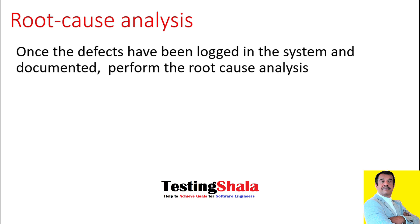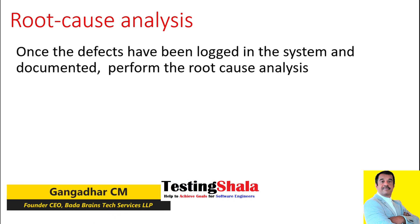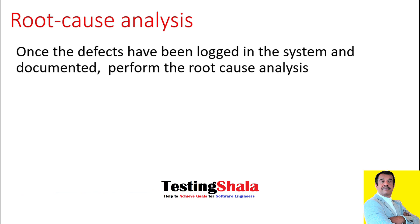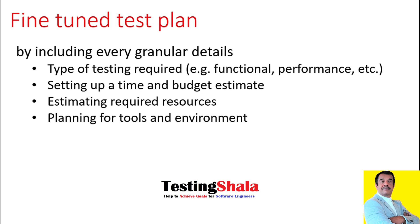The next one is root cause analysis. Every defect which we log into the bug tracking system — as a tester, we should be performing a root cause analysis to understand the rationale behind why defects keep coming in a particular module or area, whether it is because of lack of test cases, lack of test coverage, lack of testing knowledge, or lack of unit testing. We have to do a detailed root cause analysis for every major, critical, or any defect, so that we can bring in the right approaches and right planning to avoid defects moving on to the production environment.